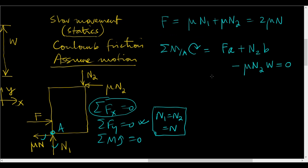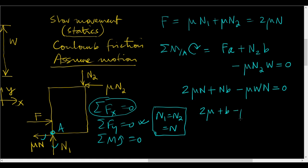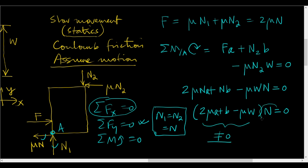F is 2μn, so I have 2μna plus nb minus μwn equals 0, which means (2μa plus b minus μw) times n equals 0. In general this is not going to be zero. Since it is not zero, one possibility is that n equals zero — that is when free motion occurs with no difficulty. However, in case there is friction, n is not zero, and this expression is not zero. Where is our mistake? Our mistake is in the assumption that sliding occurs.